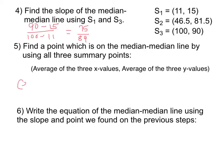So in this case, the centroid will be: 11 plus 46.5 plus 100, all divided by 3 because we're averaging three numbers, comma...